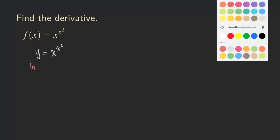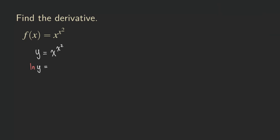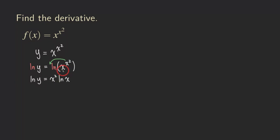So we are going to get ln of y equal to ln of x raised to the x squared. Now there is a log property saying that we can bring the exponent to the front, so we are going to get ln of y equals x squared times ln of x. This x squared is being brought to the front using the log property, so we have x squared times ln of x.